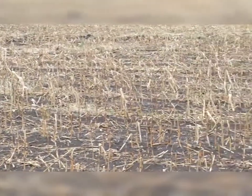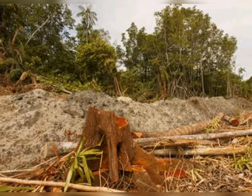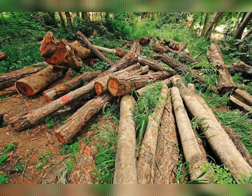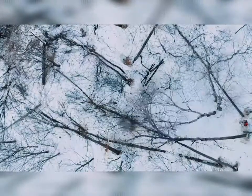Soil erosion is also caused by human beings. Human beings have become very selfish and because of their own needs, they cut down plants and trees, destroying forests in order to build factories, take wood, build roads, and fulfill other requirements. This is called deforestation — the cutting down of trees. The roots of plants hold the soil and reduce soil erosion, but if human beings cut down plants and trees, then the soil gets easily eroded, either by wind or by water.